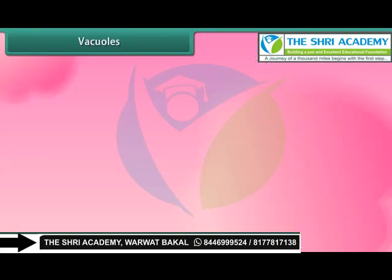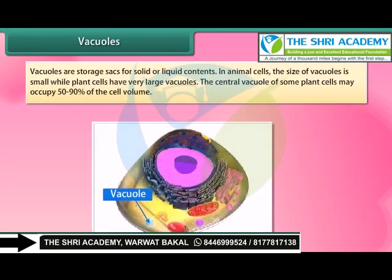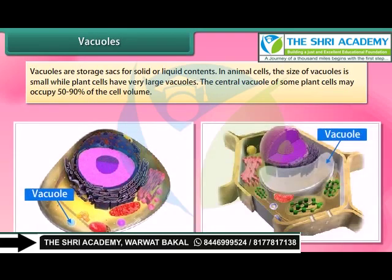Vacuoles are storage sacks for solid or liquid contents. In animal cells the size of vacuoles is small, while plant cells have very large vacuoles. The central vacuole of some plant cells may occupy 50 to 90 percent of the cell volume.